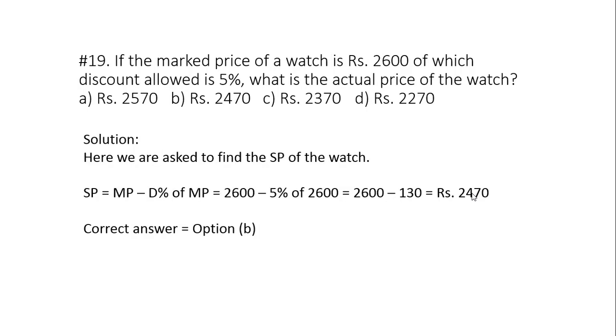Question number 19. If the mark price of a watch is rupees 2600 of which discount allowed is 5 percent, what is the actual price of the watch? Actual price means we are asked to find selling price in this question. One liner. So selling price will be mark price minus discount percent of mark price. So 2600 minus 5 percent of 2600. Now how do you calculate 5 percent? First calculate 10 percent. 10 percent of 2600 is 260. Then 5 percent is half of 260 that is 130. So total answer is 2470. It means option B.